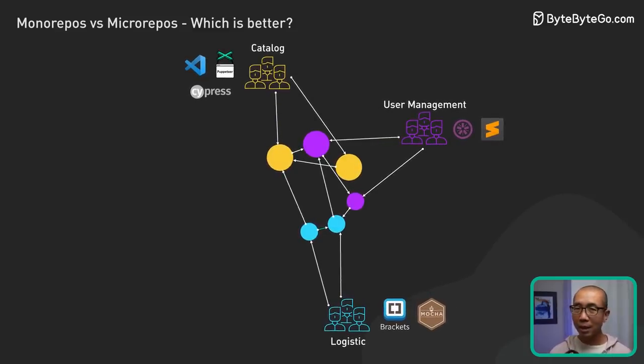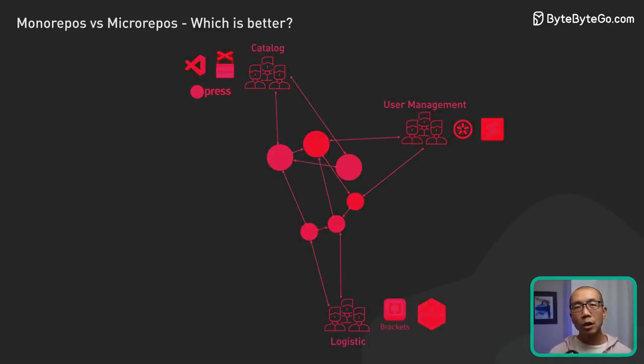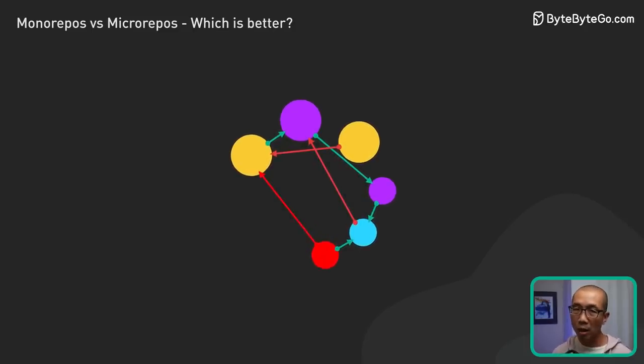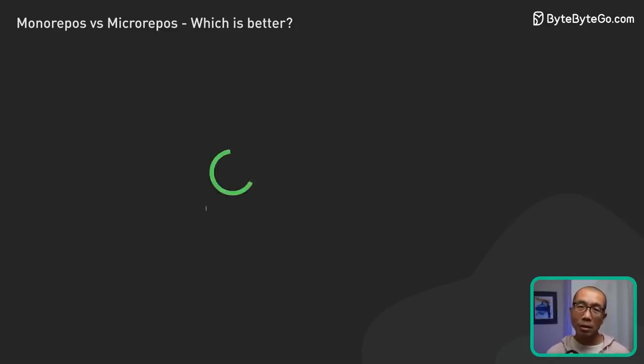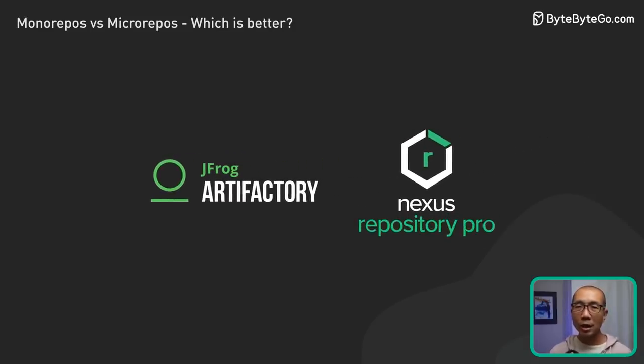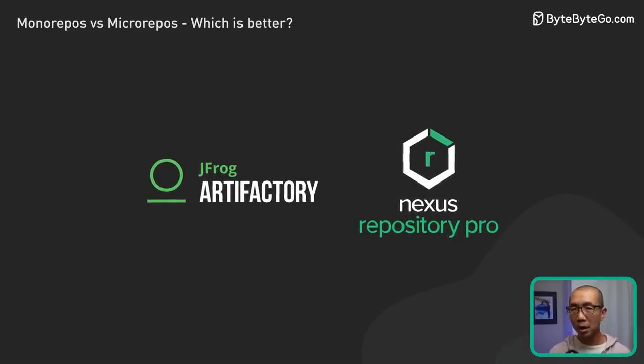However, there are downsides. Coordinating changes across multiple repos can be challenging. It requires solid collaboration and possibly specialized tooling. Managing dependencies across many repos can be challenging, but tools like Nexus or Artifactory can help.